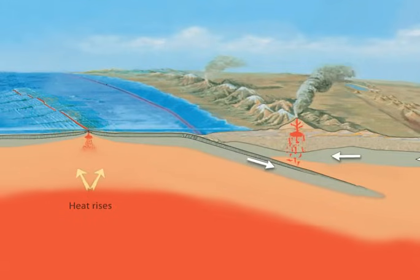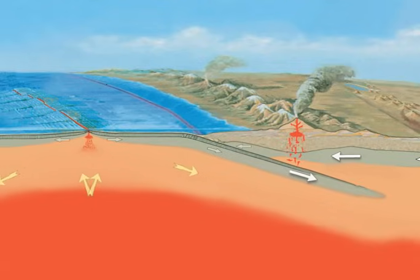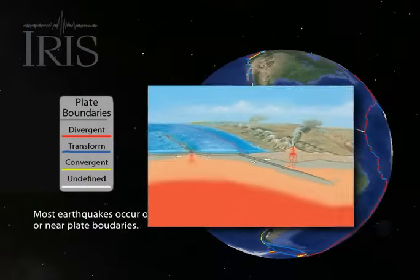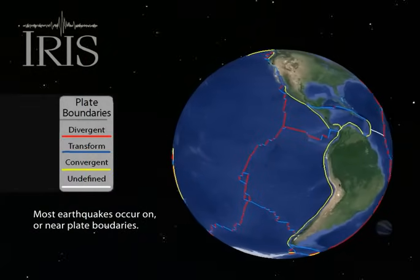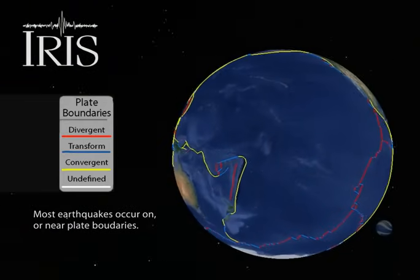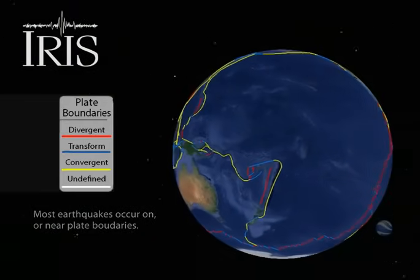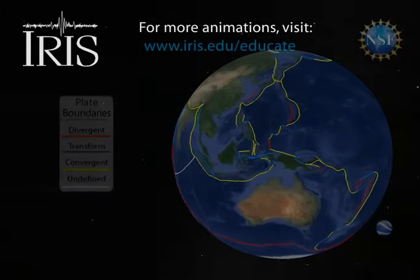Earthquakes, volcanoes, and the Earth's magnetic field are all the consequence of the Earth trying to lose heat as it converts some of the thermal energy into mechanical energy in the process. Without the tremendous heat being released from the interior of the Earth, we would not have had the mechanism to drive plate tectonics. And without earthquakes, we may not have had a way to see so deep into the Earth.